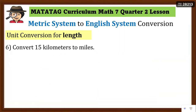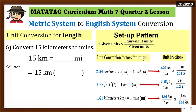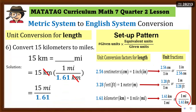So 6.44 kilometers ay may katumbas na four miles. Number six: convert 15 kilometers to miles. Write the equation and set a pattern — from kilometer, i-convert mo ng miles. Yung kilometer nasa denominator, miles nasa numerator. We have to use one mile over 1.61 kilometers. Cancel 'kilometer,' multiply one mile times 15 — 15 miles, divide by 1.61 — equals 9.32 miles (rounded to two decimal places).